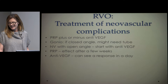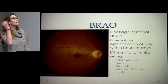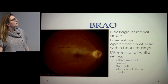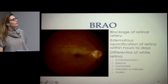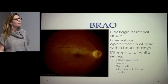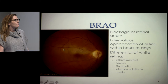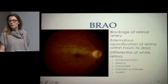Moving on to artery occlusions. For branch retinal artery occlusion, you'll see an edematous white appearance of the retina in the distribution of the artery. Patients usually complain of a field defect that's pretty stable. When looking at a white retina, there are not many causes: you're thinking infarct or ischemia, edema, infection or infiltrate, myelin, or commotio — not a whole lot of things cause a white retina.